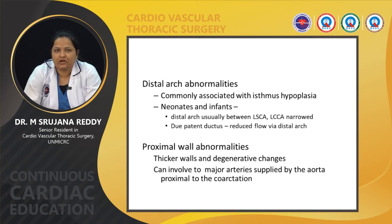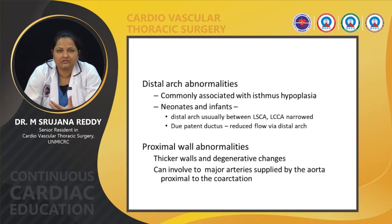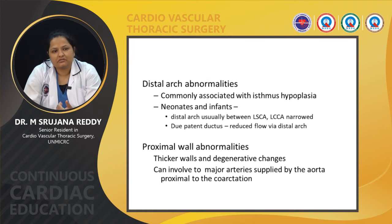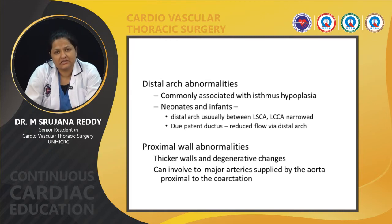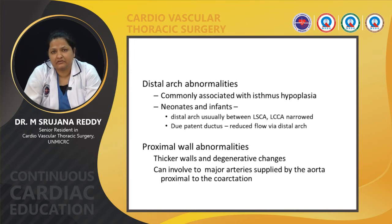Proximal wall abnormalities include wall thickening and degenerative changes. It has been observed that these can involve the major arteries supplied by the aorta proximal to the coarctation.